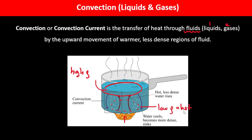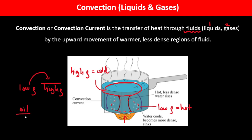Hot fluid particles have low density, while cold fluid particles have high density. Just as a low-density fluid floats above a high-density fluid, warm low-density particles rise upward while cold high-density particles drop down. Those particles then gain heat energy once more and rise again — this continuous cycle is called the convection current.